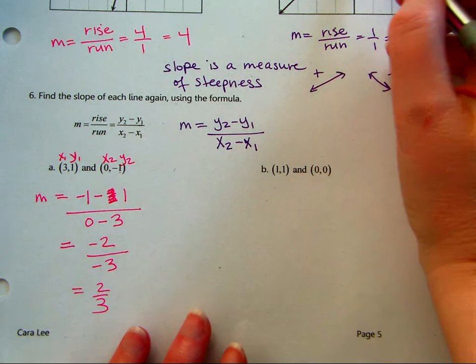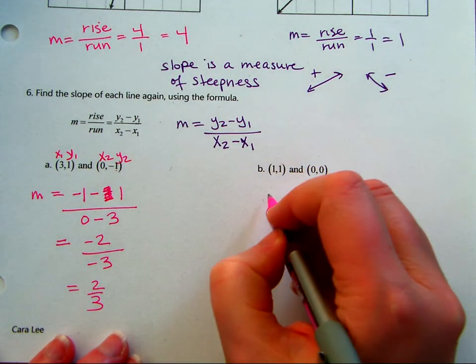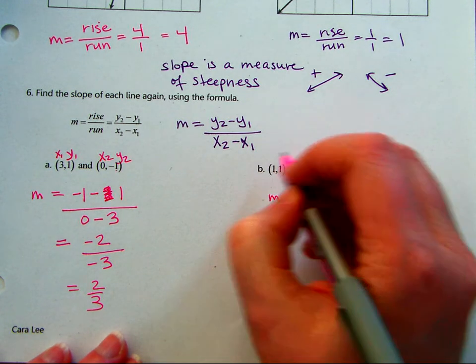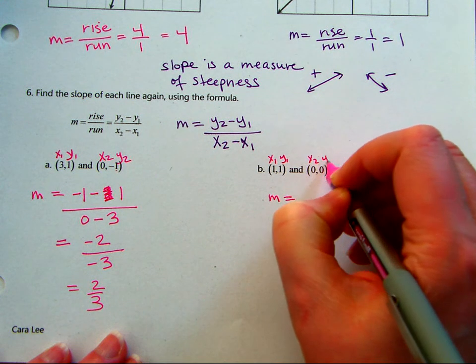I think this one matches, 1, 1, and 0, 0. So let's practice it again. m equals, we'll label x1, y1, x2, y2.